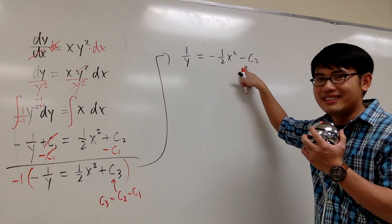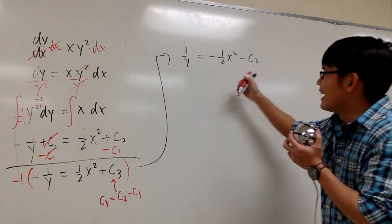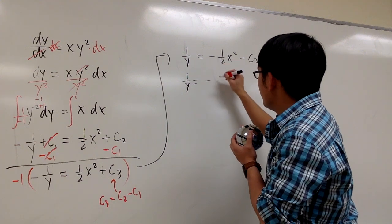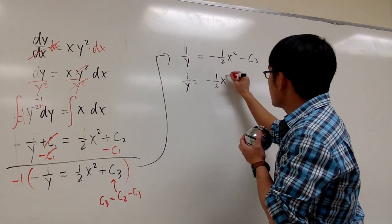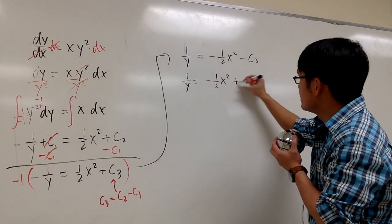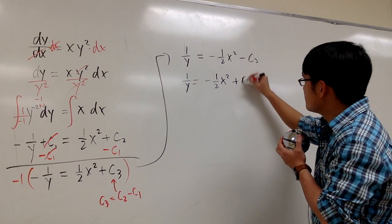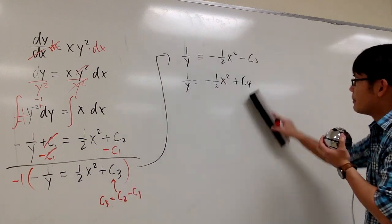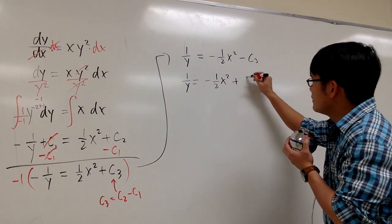But we just don't like to have negative constants. If you would like, I'm going to write this as 1 over y is equal to negative 1 half x squared, but now I'm going to write this as plus c4, another constant. But I'm just looking at this as a positive value. So plus c4.